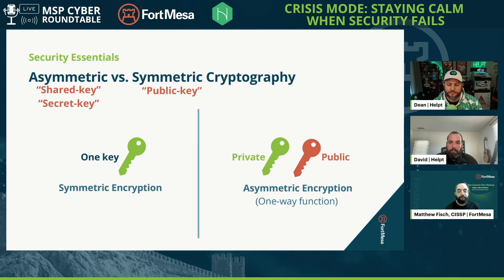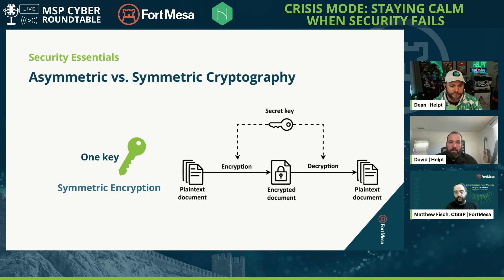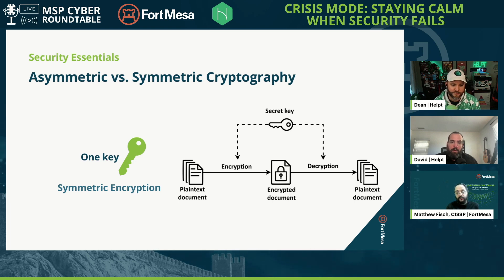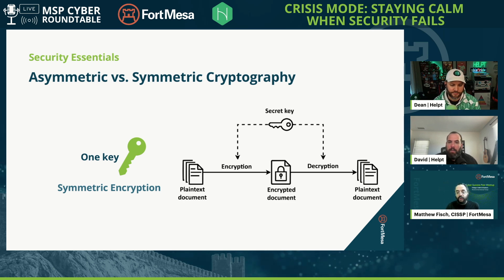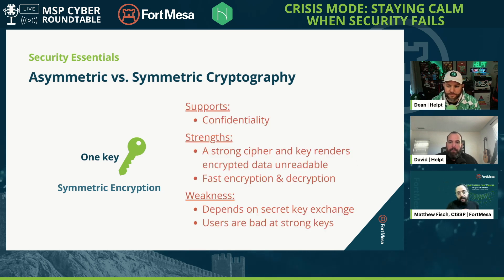Symmetric key encryption: one key. You take some plain text or unencrypted data, you use the key and a cipher — which is sort of like the lock that the key goes in — and you encrypt the data, the document, whatever. It's totally unreadable by anyone who doesn't have the key. Keep the key safe and the data doesn't have to be as safe. When you want to look at the data, you use that key to decrypt it and get the same information back. That's what most people think of when they think of cryptography.